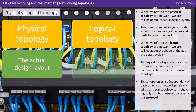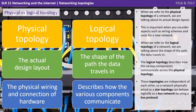When we refer to the physical topology of a network, we're talking about its actual design layout — important when considering aspects such as wiring schemes and the cost for a new network. When we refer to the logical topology of a network, we're talking about the shape of the path that the data travels in. The logical topology describes how the various components communicate across the physical topology. These topologies are independent of each other, so a network physically wired as a star topology could behave logically as a bus network by using a bus protocol.